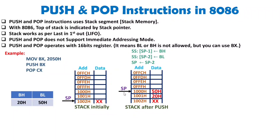The stack pointer decrements by 2 during a push. First it decrements by 1, and at that point the BH data — which is 20 hex — is loaded onto the stack at SP minus 1. Then the stack pointer decrements by 1 again, reaching SP minus 2 at address 1000 hex, where BL — holding 50 hex — is loaded. So BL is loaded onto the stack as the stack pointer decrements by 2 total.